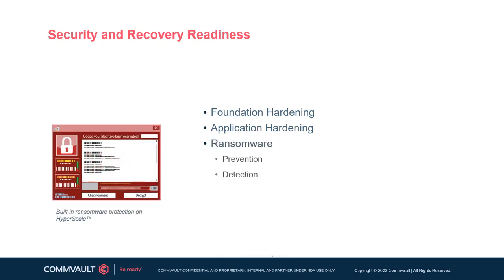Commvault has several ransomware features that protect the platform from being the conduit for spreading ransomware to backup data and that can also detect ransomware to stave off potential attacks. The inbuilt ransomware protection on Hyperscale X comes with immutability, preventing data from being modified or deleted by anyone once it has been written. Also known as the ransomware protection lock, this feature is the first level of defense in the layered secure data management framework.